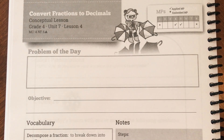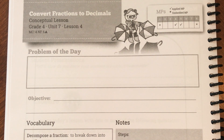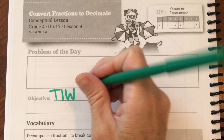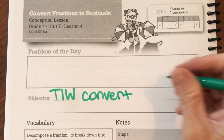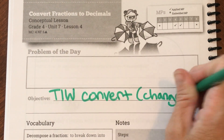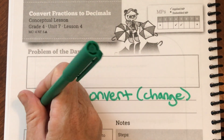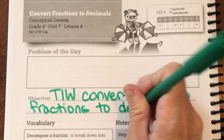Good morning ladies and gentlemen. Today we are on page 237 and we are going to be doing lessons 4 and 5 together. Our objective or our goal today is: I will convert — and convert means change — so I will convert or change fractions to decimals.